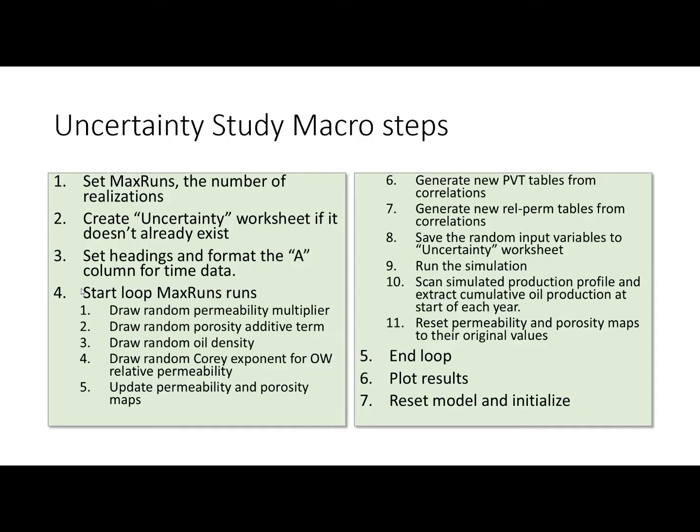Once that is done, we're ready to run the simulation. The first thing it does is draw a random permeability multiplier, because this macro will multiply the permeability by a random factor — random within reason, from a factor of two to a factor of one half, sort of in that range. It's going to multiply the whole permeability matrix, the whole permeability map. It's also going to draw a random porosity term — just add or subtract a small amount for each different realization. And it will draw a random oil density within reason.